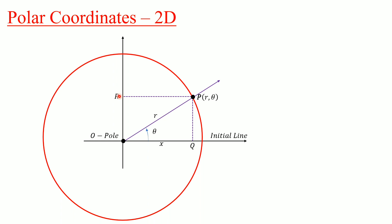We know that the distance OR is Y. Now let us consider the right-angle triangle O, Q, P — this is the right-angle triangle.